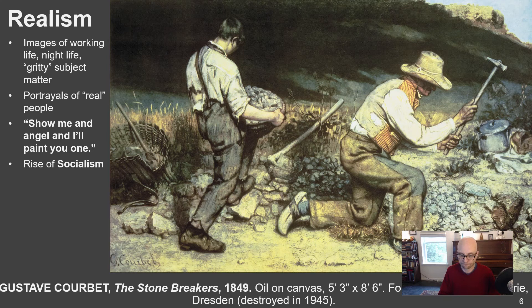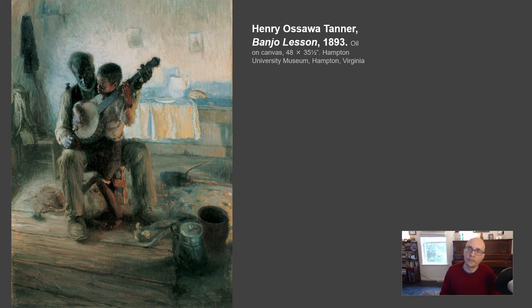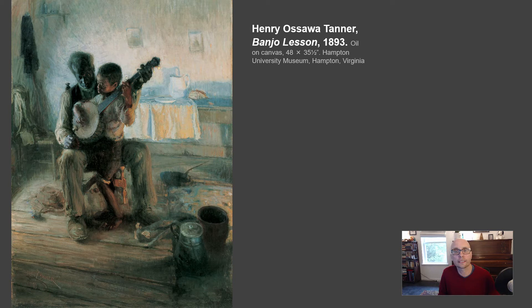Realism was not just a French movement — it spread through Europe and even into America. American artist Henry Ossawa Tanner, an African-American painter, had trouble making his career in the United States because of segregation and racism. He found a much more open and receptive audience in France, where he moved and was exposed to the work of Courbet. Like Courbet, he painted everyday life and what he knew. Courbet painted the peasants of rural France; Tanner painted people from his African-American community in the United States — friends, neighbors, everyday scenes — in a rough, unfinished style very much influenced by Courbet.